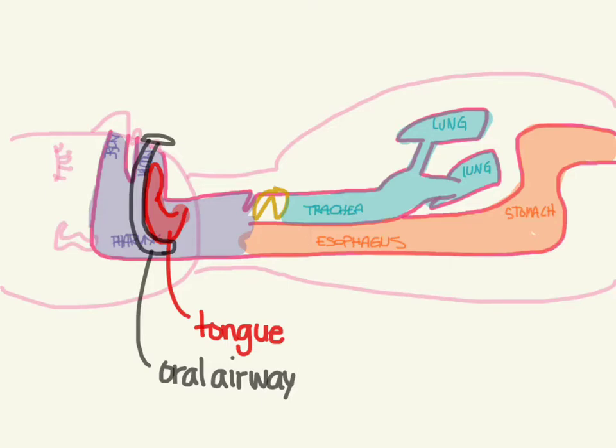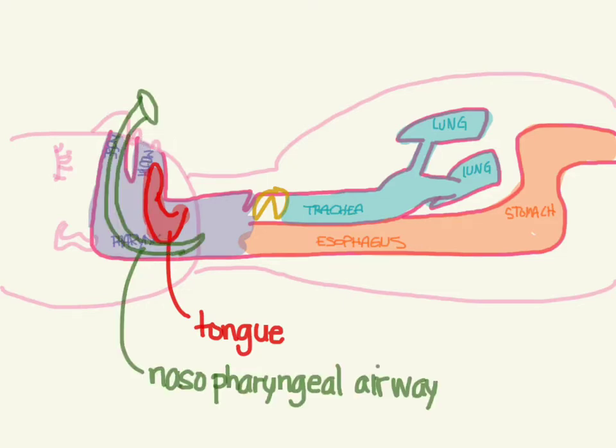Oral airways are hard, plastic, and obnoxious to stick in someone's throat, so they're good for people who are completely obtunded. For people who are a little bit awake and don't tolerate this, you can use a nasal airway. This works similarly by putting space between the tongue and the back, and it's actually hollow so you can send air through it. It's soft and flexible, so it's easier to tolerate.